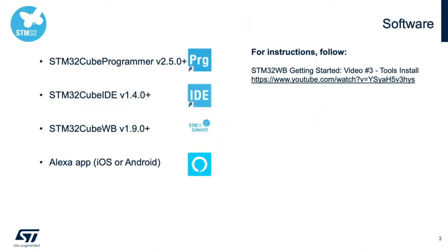To get started, make sure you have these software tools installed: the Cube Programmer to update the corresponding Zigbee stack, the Cube IDE for building and programming the Zigbee user application firmware, the CubeWB package, which is where the Zigbee stack and examples reside, and finally the Alexa app on your mobile phone to use as a user interface. You can also refer to the tools installed video number three of the STM32WB Getting Started series for step-by-step instructions.